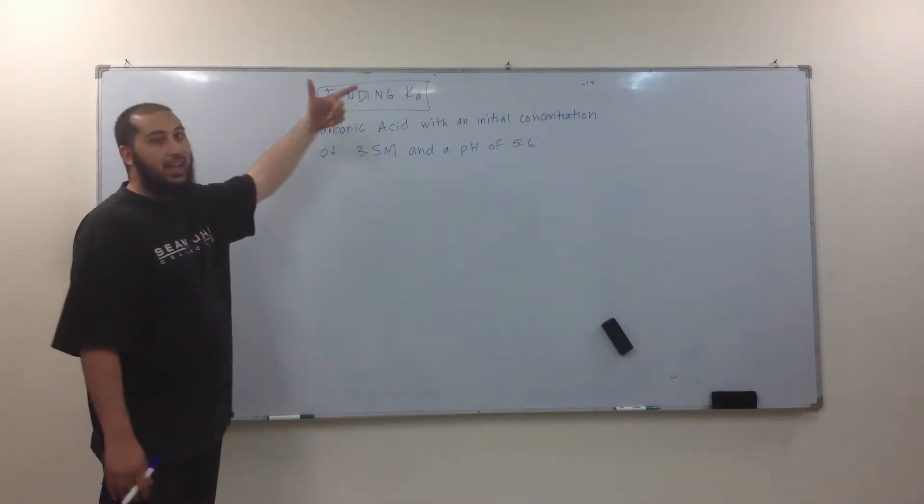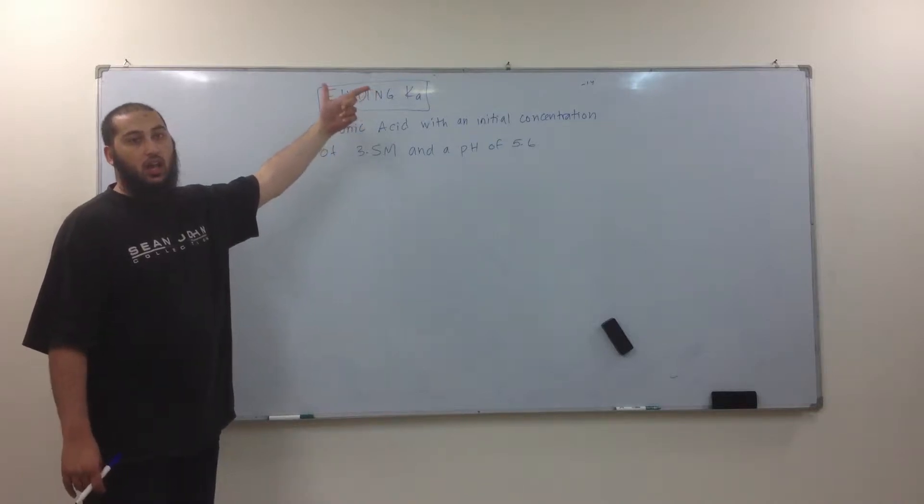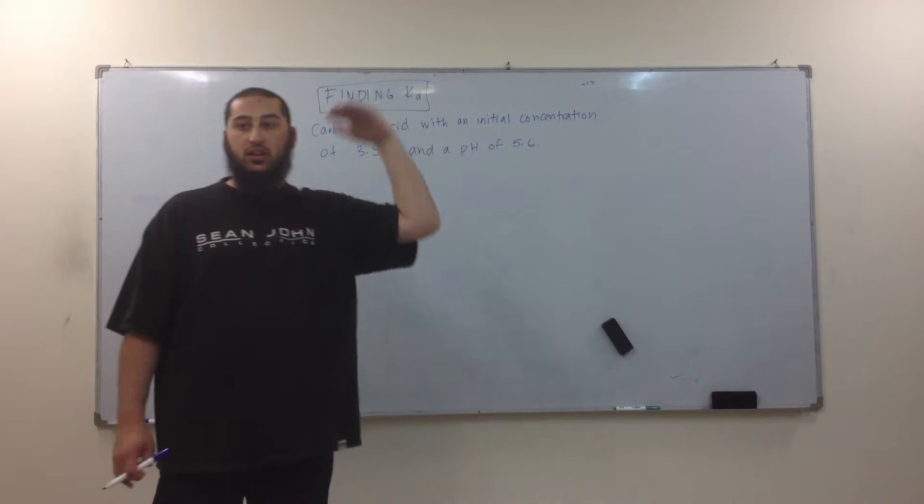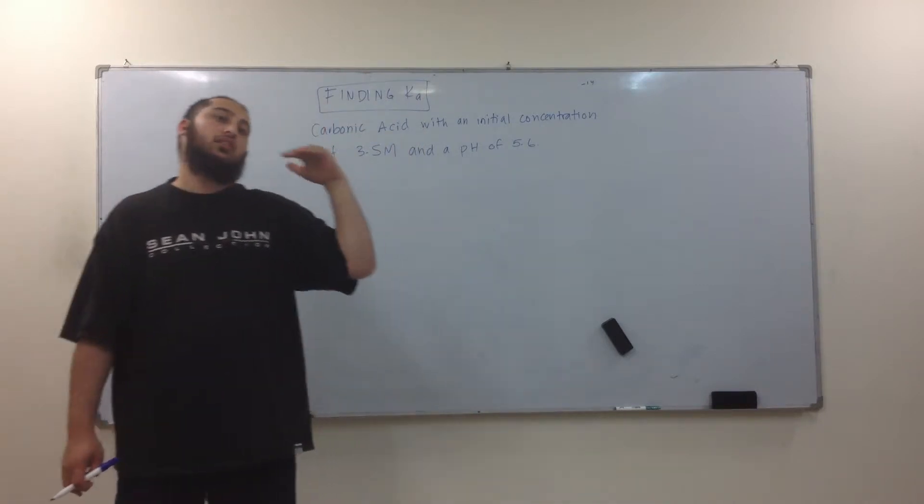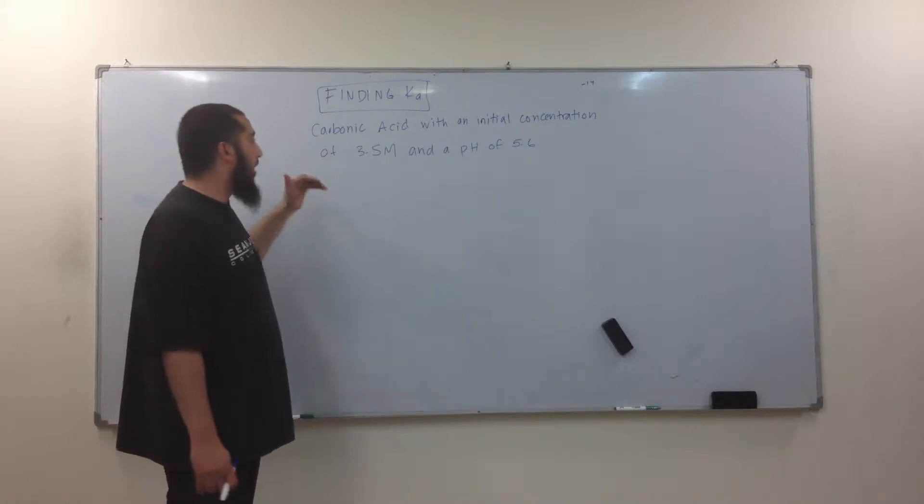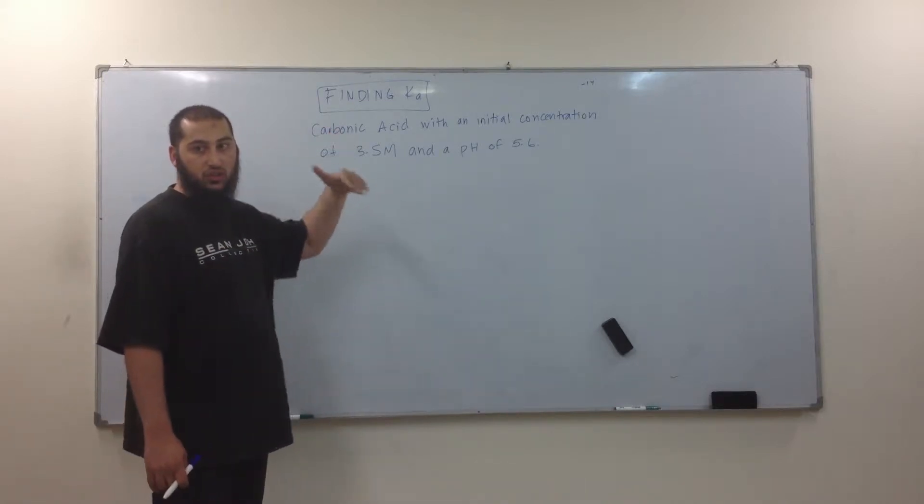So this is a question about finding the Ka. What's Ka? Equilibrium. It's the same thing as Ka, right? Concentration of products divided by the concentration of the reactant. So we need to find that at equilibrium, not the initial of the chain, right? No.